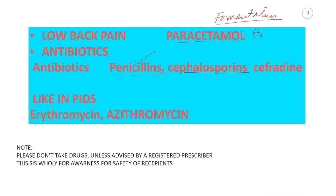The safe antibiotics considered are amoxicillin, penicillin, and cephalosporins — especially first and second generation. If atypical microorganism involvement is present, such as Mycoplasma hominis or other atypical organisms, then erythromycin or azithromycin are considered Category B drugs and can be used. Never go for self-medication unless advised by your respective healthcare professional. Thank you.